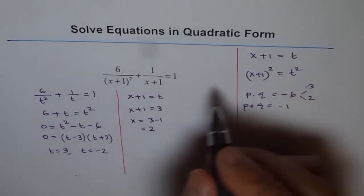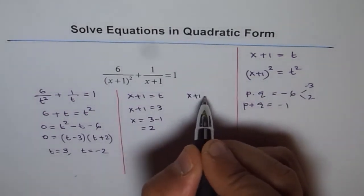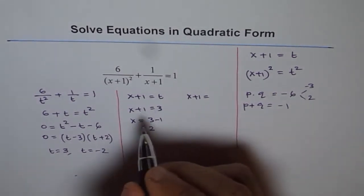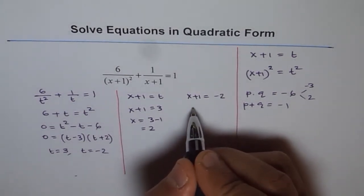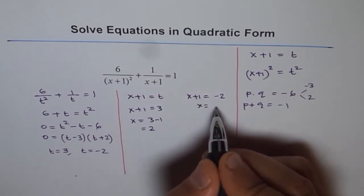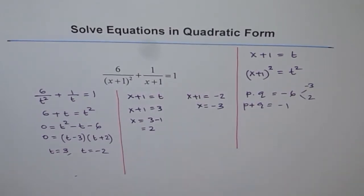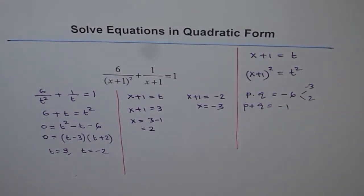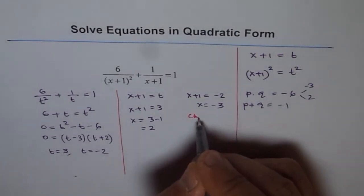The other one is x plus 1 equals minus 2. In that case, we have x equals minus 2 minus 1 as minus 3. So these are two solutions which could give us the answer. It's a good point to check these solutions. Let's check them.